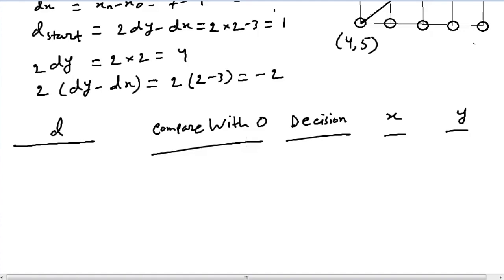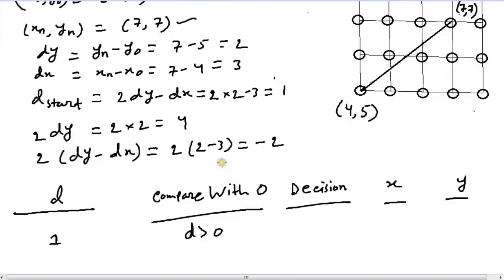So, we have our initial d to be 1. Obviously in this case d is greater than 0, so we choose the pixel NE. This is E and this is NE. And of course our initial pixel is always glowed. So, now we choose the pixel NE and glow the pixel.